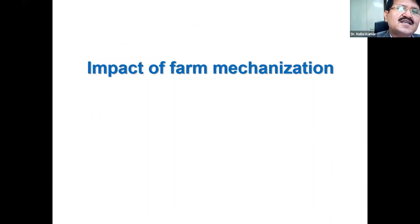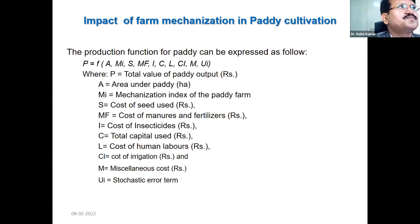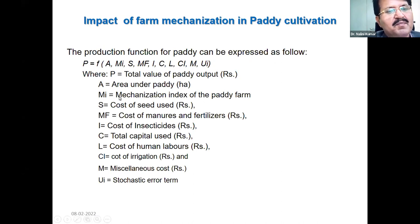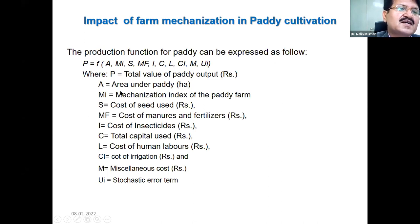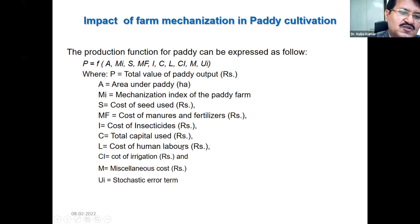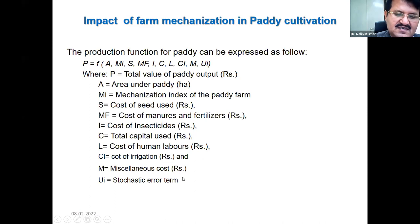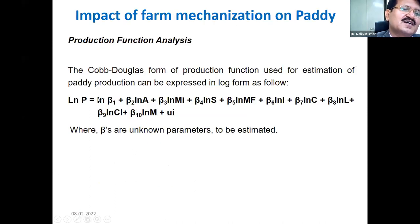For understanding the impact of farm mechanization, production function analysis was performed using mechanization index as one of the independent variables. A Cobb-Douglas form of production function was used, in which the total value of paddy output is the dependent variable. MI is the mechanization index, A is area of paddy, S is cost of seeds, MF is cost of minerals and fertilizer, I is cost of insecticide, C is cost of fuel, cost of human labor, cost of irrigation, and miscellaneous cost. This can be estimated in log form.